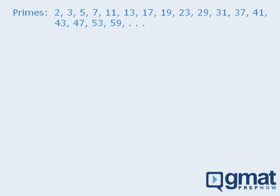I'm going to show you one technique for doing this. Let's find the prime factorization of 60. Since 60 is not a prime number, we can write it as the product of two numbers. One pair is 6 and 10. Is 6 a prime number? 6 is not prime, which means we can write 6 as the product of two numbers: 2 and 3. Both of these numbers are prime, so we'll circle them to remind us that we can't factor them any further.